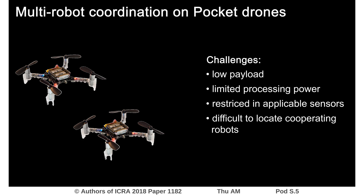Providing multi-robot coordination on ultralight robot platforms like pocket drones is challenging, since they are not able to carry sophisticated and heavy sensors and have limited computing power. These limitations make it harder to localize co-operating robots, which therefore complicates basic coordination tasks like collision avoidance or formation control.